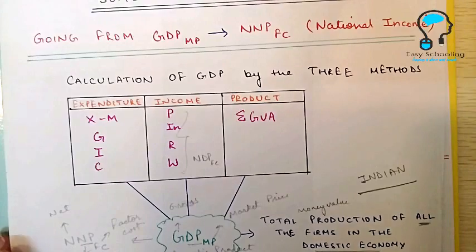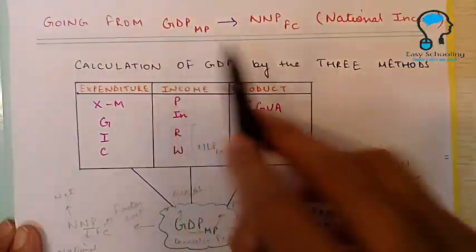So by following these three easy steps you can change from GDPMP to NNPFC.